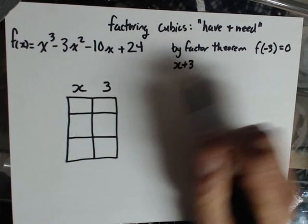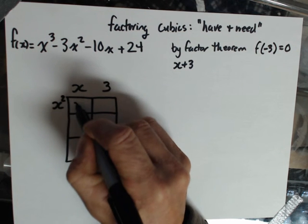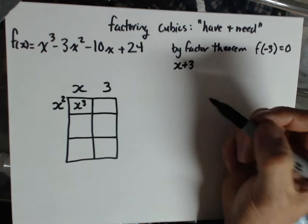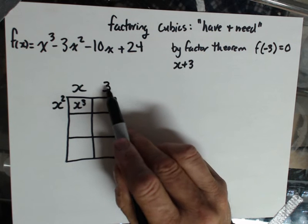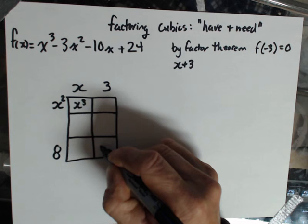I know that I'm going to be multiplying the x by x squared because I get an x cubed out of that. I know that I'm going to be multiplying this 3 by 8 because I get a 24 out of that.